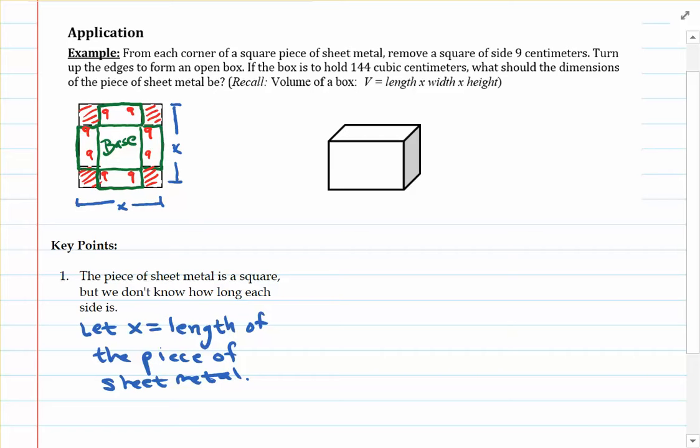So with that said, it would probably be a good idea to figure out an expression representing the side lengths of the base. So the big clue here is that we're removing a nine by nine square from each corner. So what that means is that if we start out with a side length of x for this piece of sheet metal, and we take nine units away, or nine centimeters away from one side, and also nine centimeters away from the other side, how many total centimeters have we removed from x?